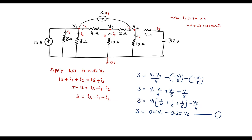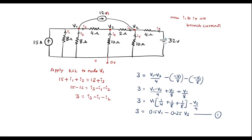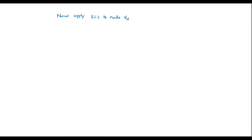Now let us apply KCL to node V2. At node V2, current 12A, I7, and I5 are incoming, while I6 is outgoing. So: 12 + I5 + I7 = I6, which gives 12 = I6 - I5 - I7.